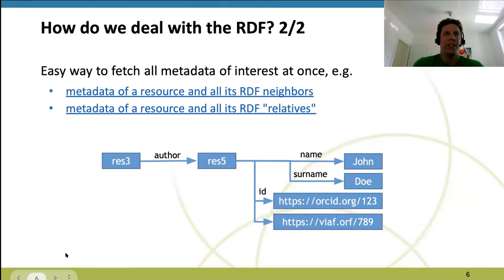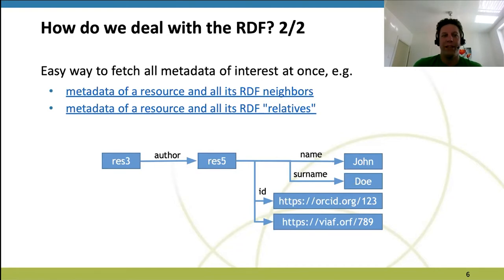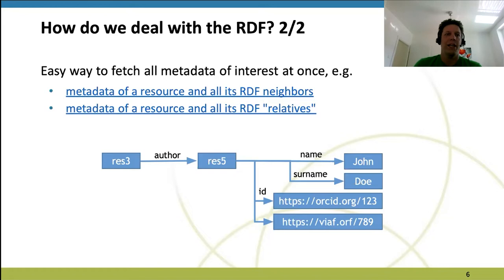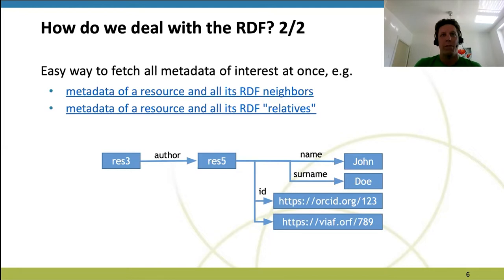The drawback of such data organization is that metadata are not available locally. If we want to know the name of the author of resource 3, it's not directly available on resource 3 — it has to be fetched from the resource storing that named entity data. To deal with that, our repository at the API level provides an easy way to fetch broader sets of metadata — broader RDF subgraphs — like metadata of a given resource and all its RDF neighbors at once, or metadata of a resource and all its relatives like children or parents according to a given RDF property.